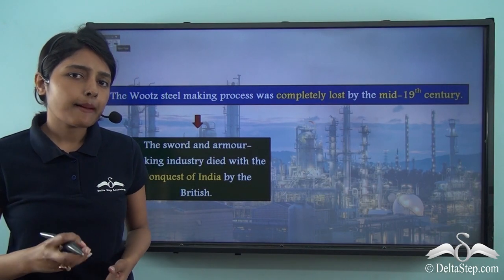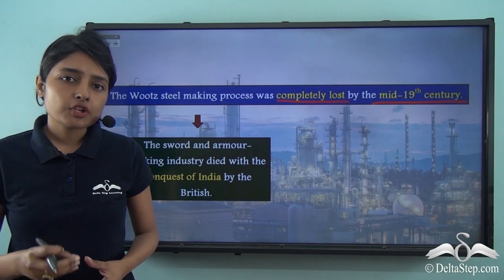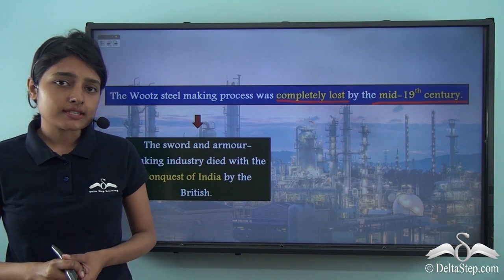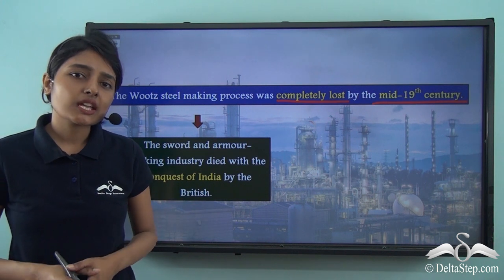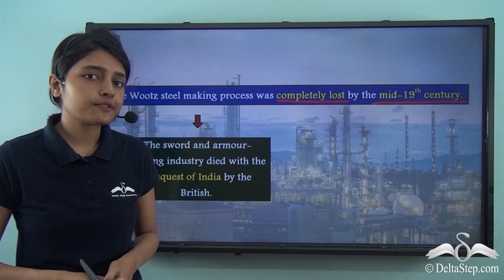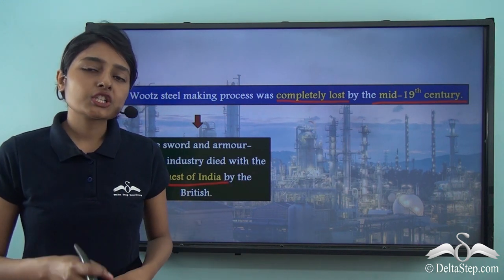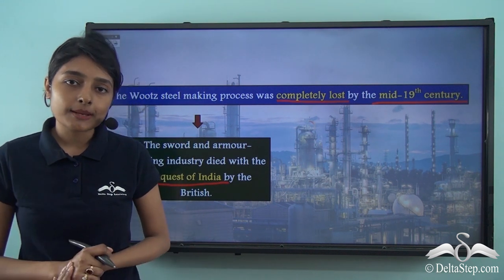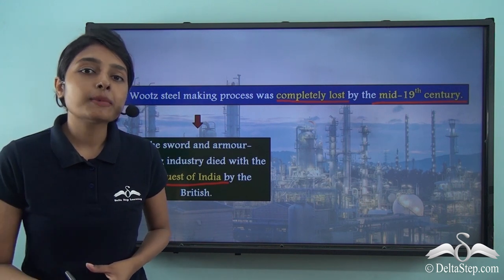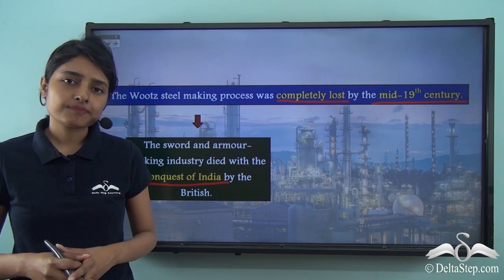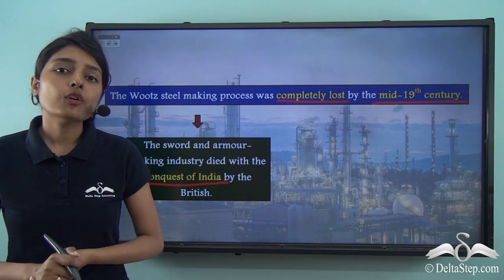Unfortunately, the wootz steel-making process was completely lost by the mid-nineteenth century. The first and foremost reason was that the sword and armour-making industry died with the British conquest of India. When the Britishers came to rule the Indian subcontinent, the rulers were subordinated to them and had to acknowledge the suzerainty of the British crown. The rulers were no longer independent and autonomous, and they were no longer fighting wars amongst themselves, which is why the entire sword and armour-making industry fell out of importance.